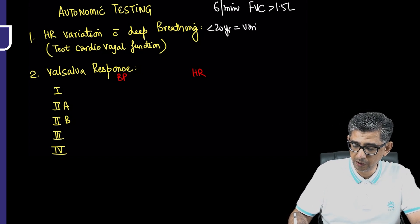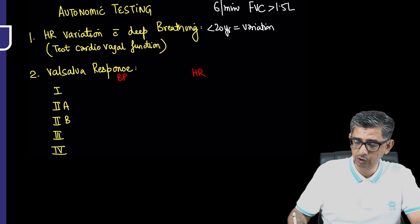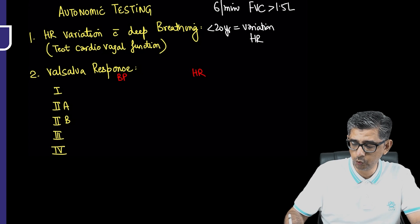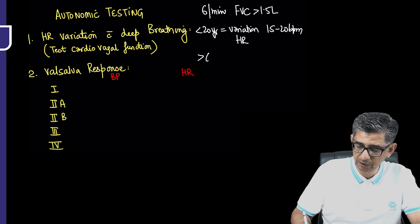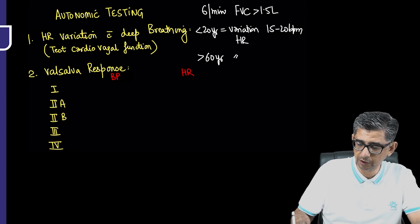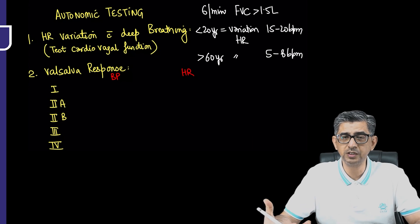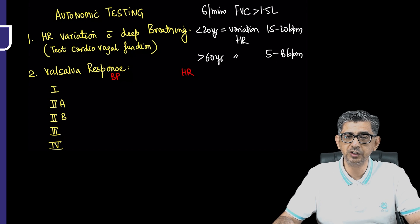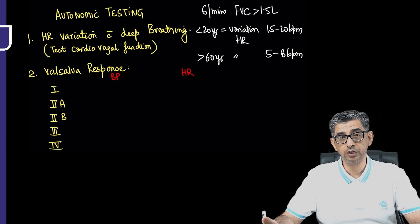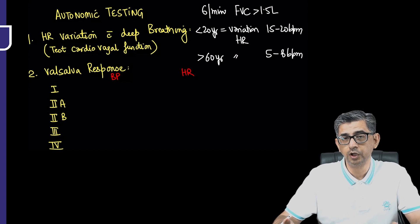The variation of heart rate in a younger patient, usually less than or about 20 years of age, is in the range of about 15 to 20 beats per minute. In contrast, for an older patient — say older than 60 years — the variation is only about 5 to 8 beats per minute. It varies on the basis of age, with statistical charts available. The bottom line is that this normal variation will be affected in a person who has dysautonomia.